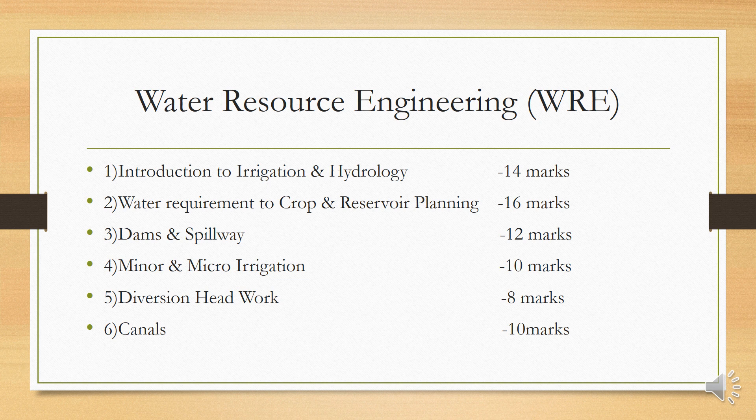The first chapter is for 14 marks. The second chapter is Water Requirement to Crop and Reservoir Planning. In this chapter, we learn about the different water requirements of different crops, then delta, duty, base period, and some numericals based on delta, base period, and duty.